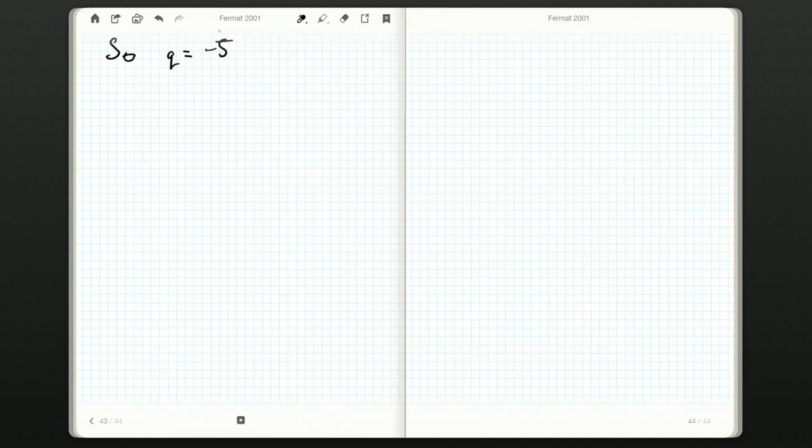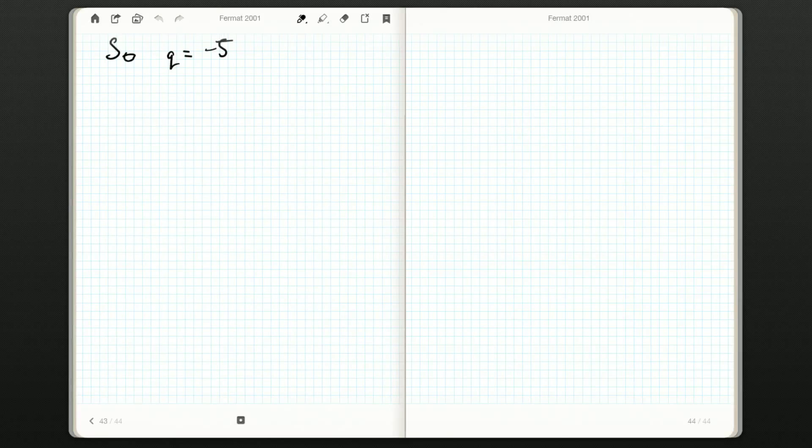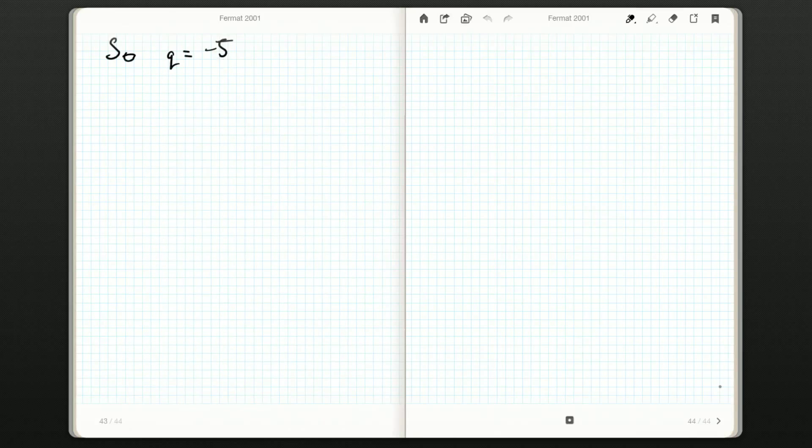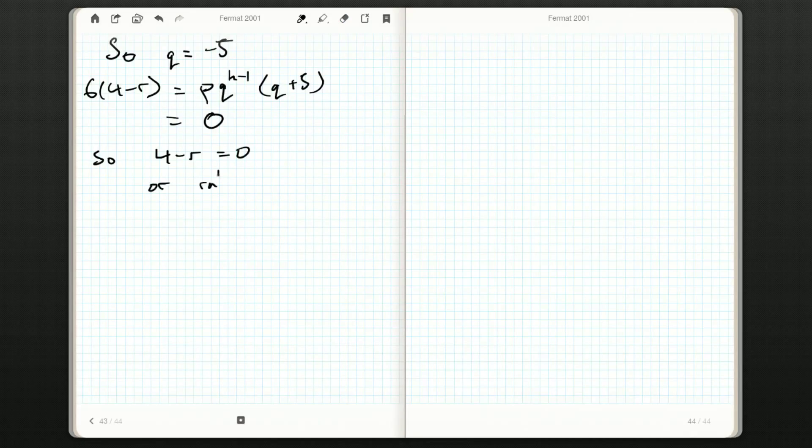So, that tells me that q has got to be equal to negative 5. I think I guessed at that a little while ago. All right. So, we know we've got q is equal to negative 5. And now that if we plug that back into one of these two equations over here on the left, we can figure out what r is. So, we have 6 times 4 minus r, well, that's p, q to the k minus 1, q plus 5, which is equal to 0, and that tells us that r is equal to 4.